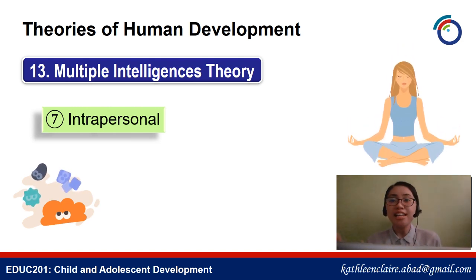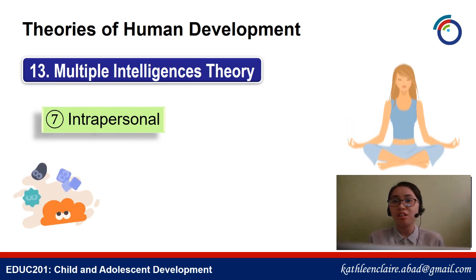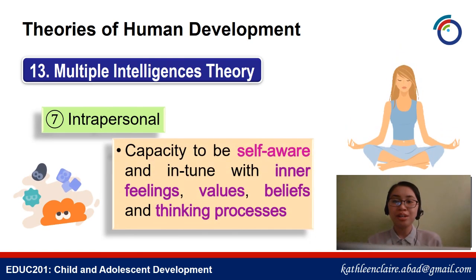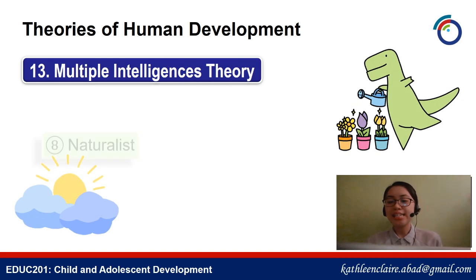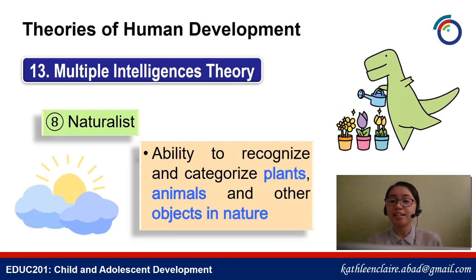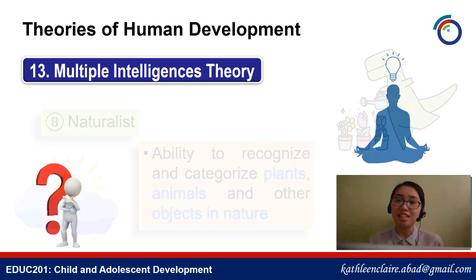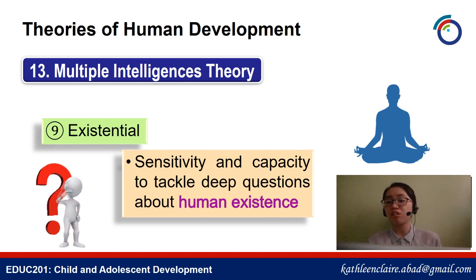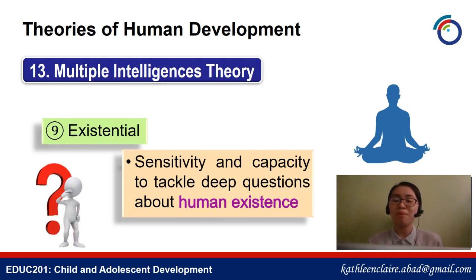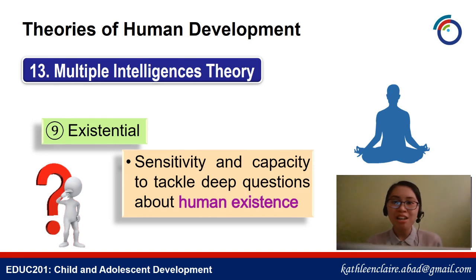Intrapersonal is knowing yourself — you are self-aware and in tune with your inner feelings, values, beliefs, and thinking processes. The naturalist intelligence is the ability to recognize and categorize plants, animals, and other objects in nature. And lastly, existential intelligence refers to sensitivity and capacity to tackle deep questions about human existence, such as: What is the meaning of life? Why do we die? And how did we get here?